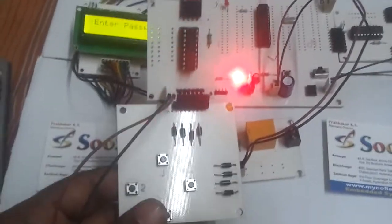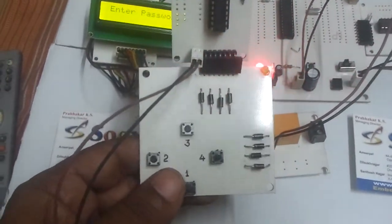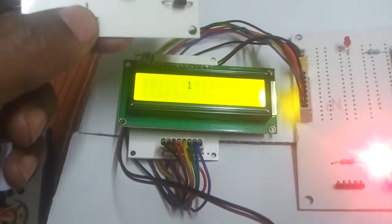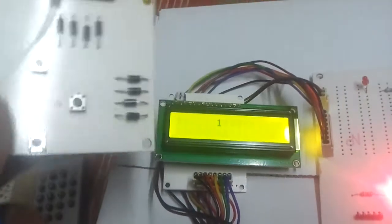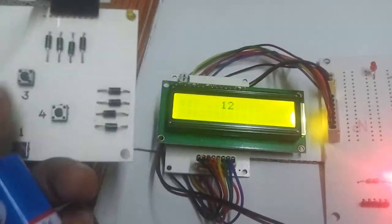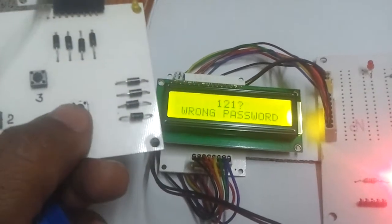The user can enter the password using this RF transmitter. Suppose if I press 1, the 1 gets displayed here. If I press 2 and if I press 1 again, it says wrong password.